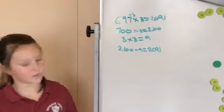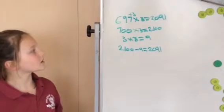Okay, because 7 times 3 is 21, and then you just add the two zeros.